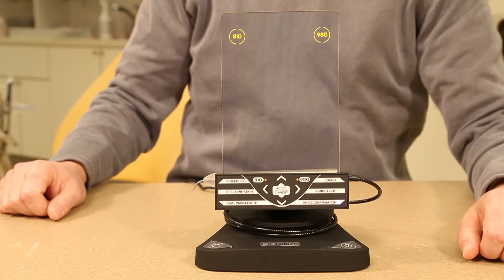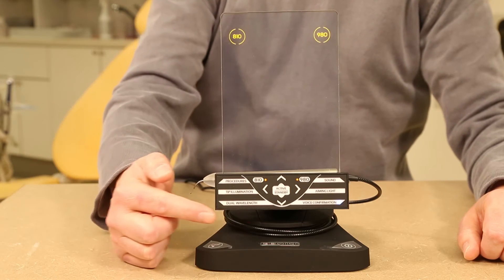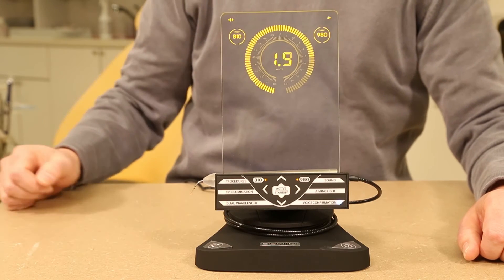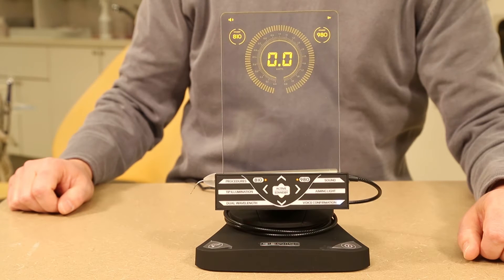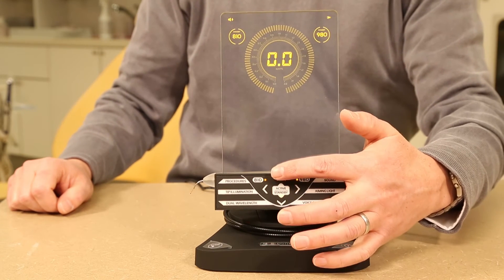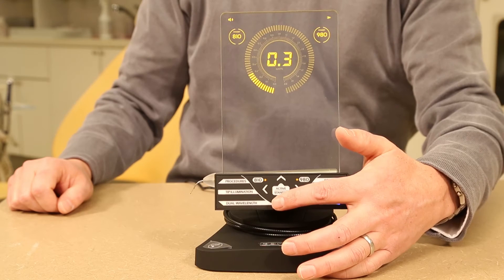Next you will select the desired wavelength: 810, 980, or dual. You can then adjust your power setting manually or select your procedure from the list of preset procedures.